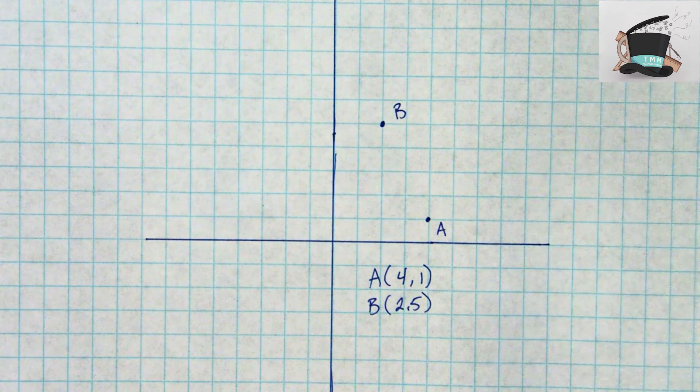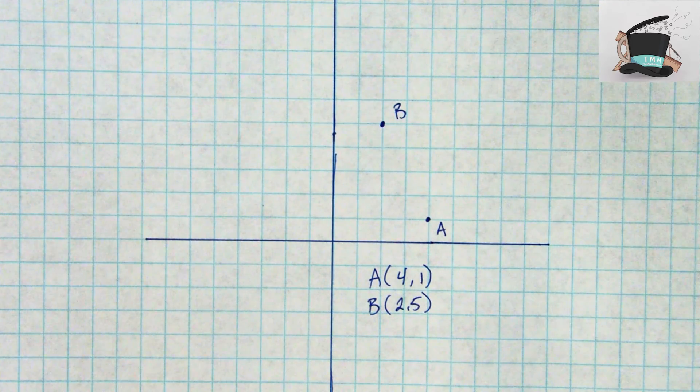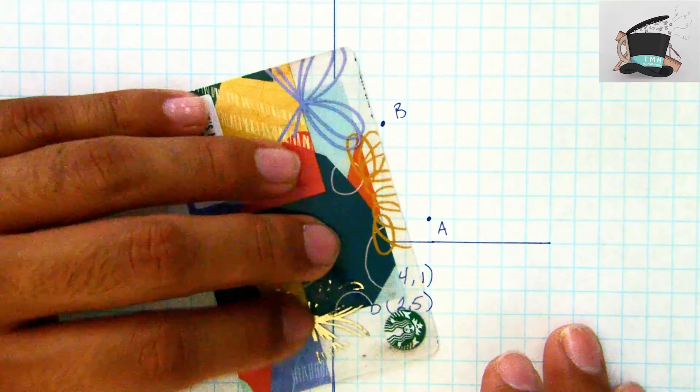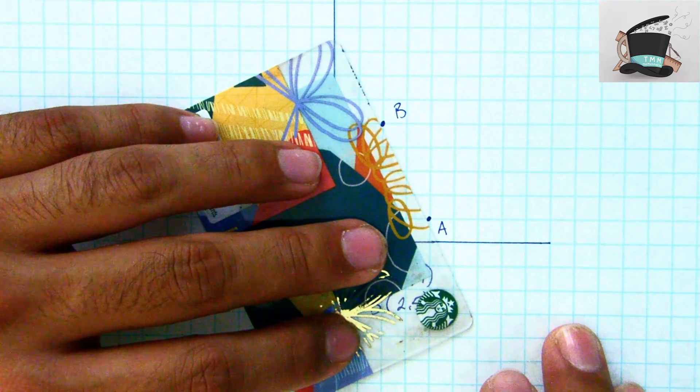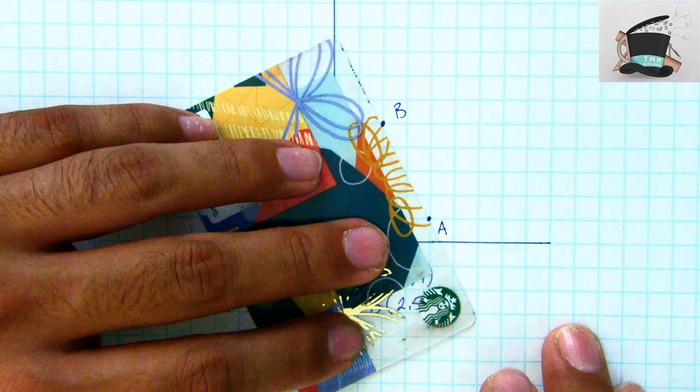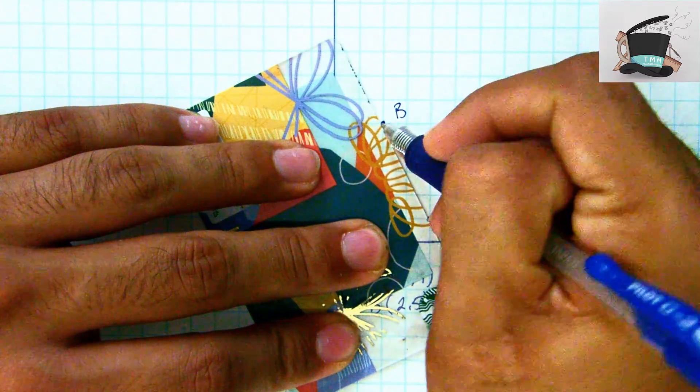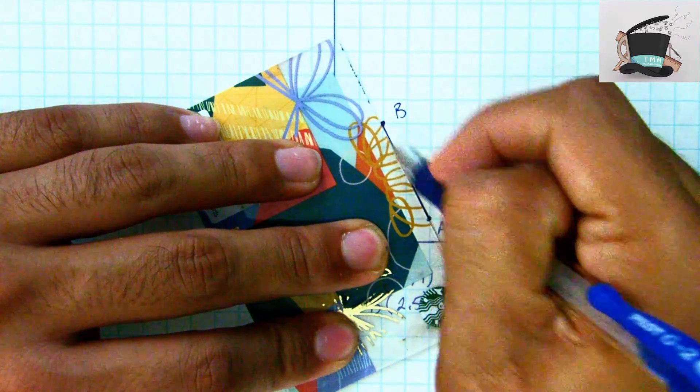The next step now is that we just need to connect those points to create our line segment, so I'll go ahead and use this old Starbucks gift card as my ruler and I'll line up those two points so that when I connect them it creates a nice straight line segment.